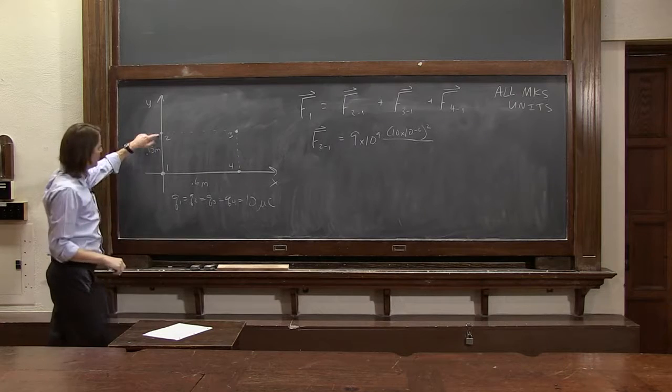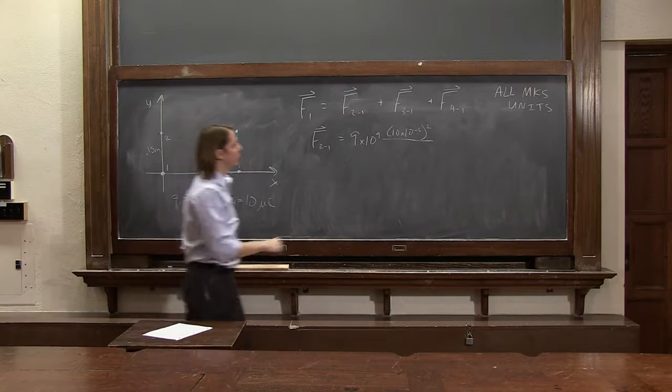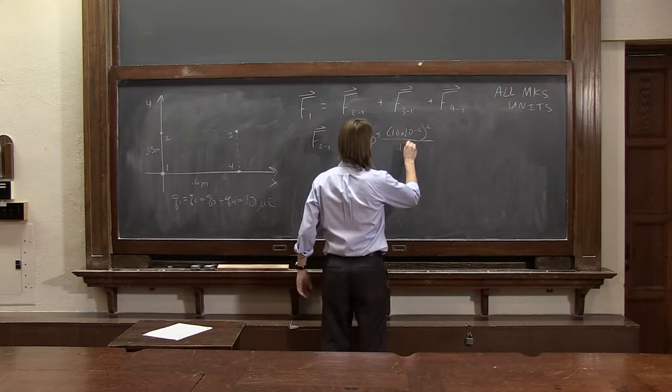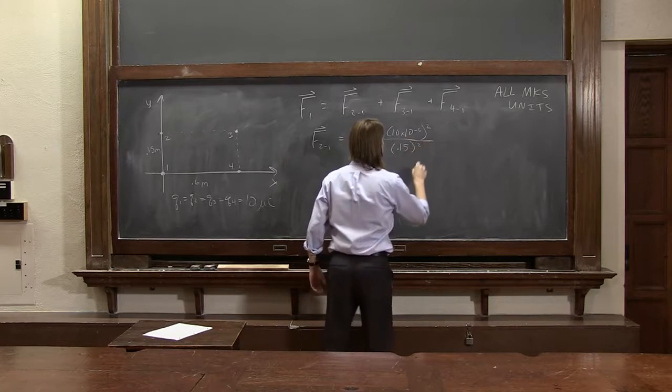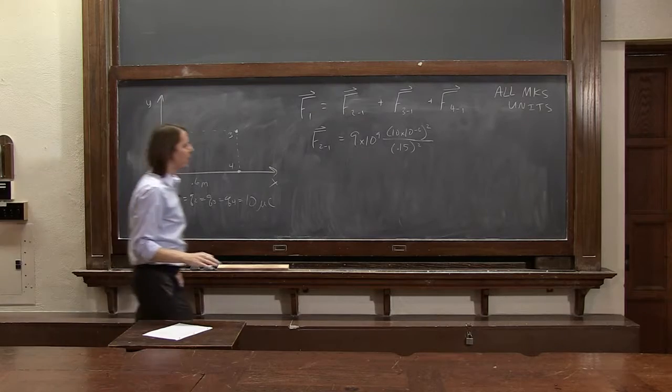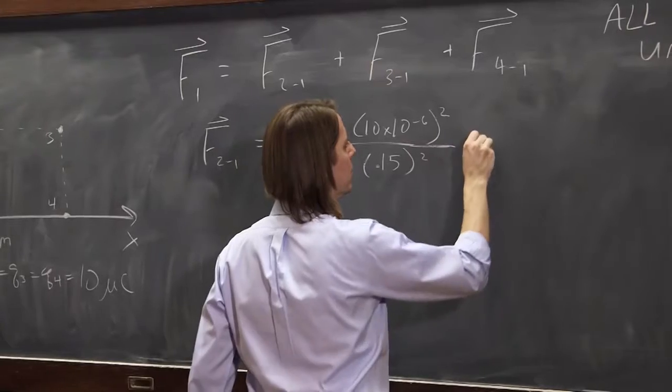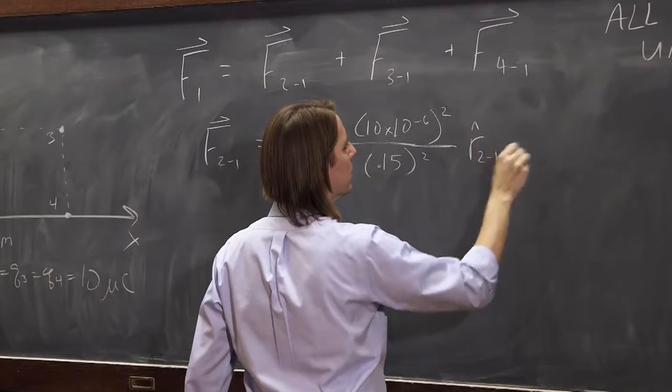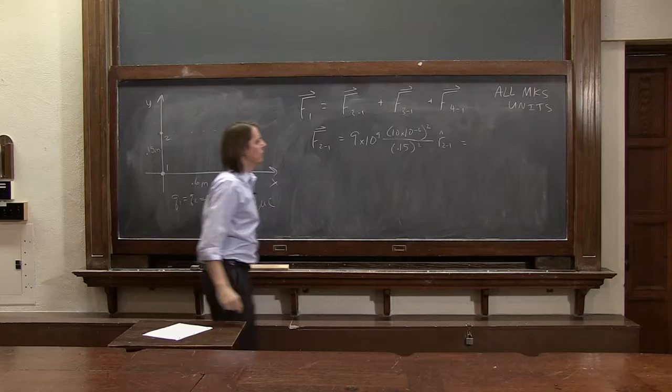Over the separation. So 2,1 was 0.15 meters squared. And then we would write R hat 2,1. And we would see what we get.